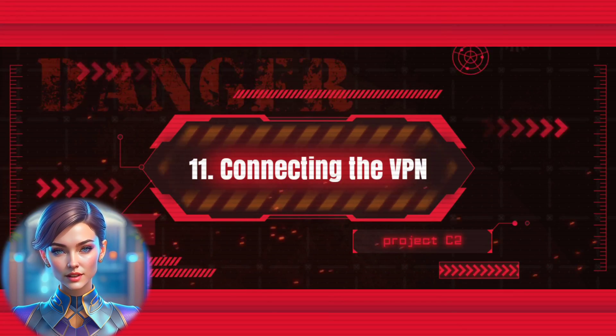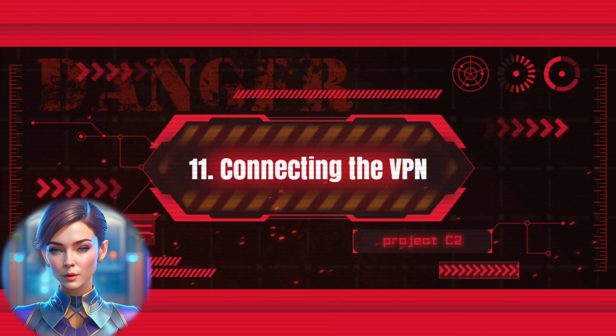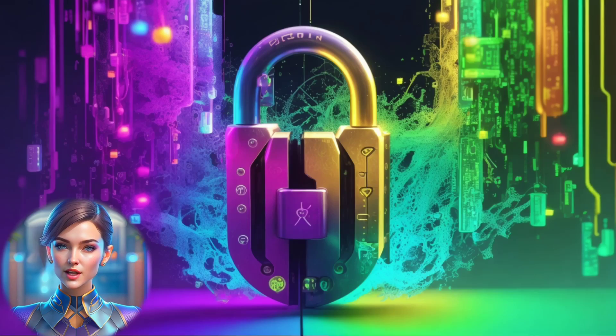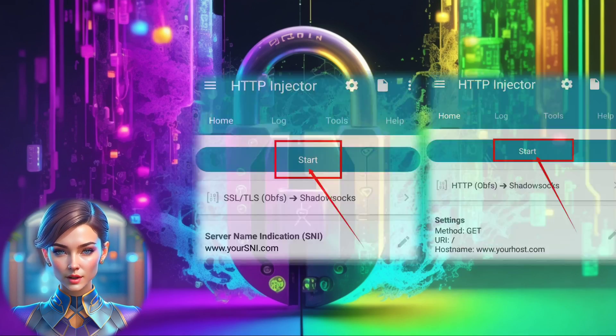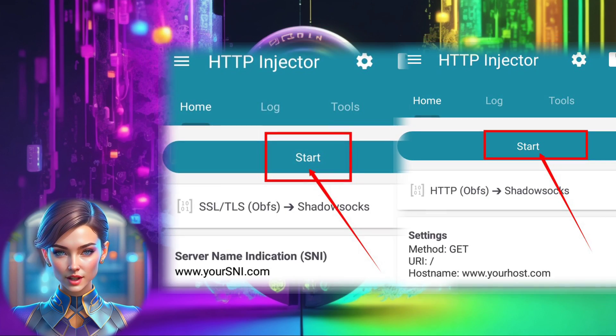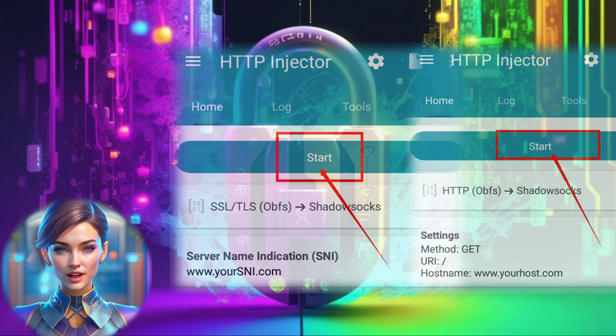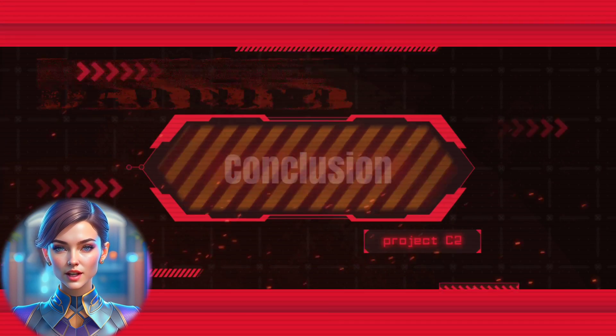Step 11: Connecting the VPN. Now, regardless of the obfuscation method chosen, click on the Start button to initiate the VPN connection.